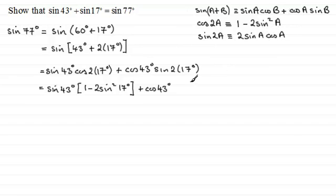So I can express this as 2 sine of 17 degrees multiplied by the cosine of 17 degrees. So what I'll do now is just expand the brackets and tidy up this term.